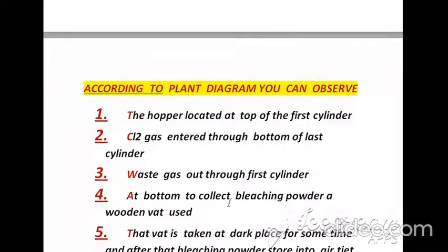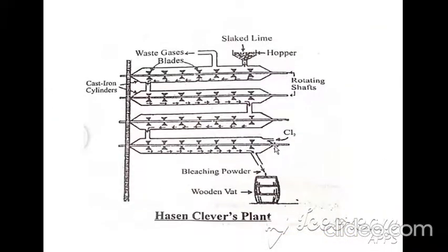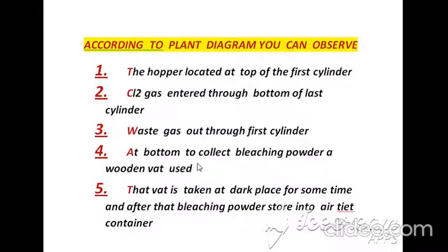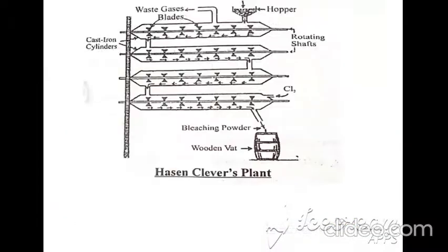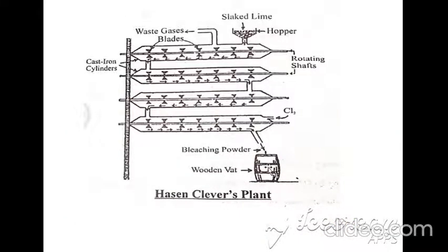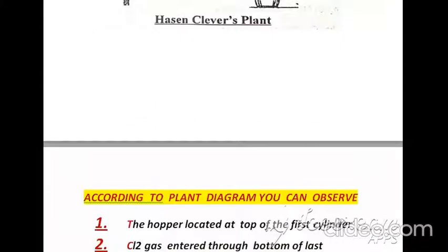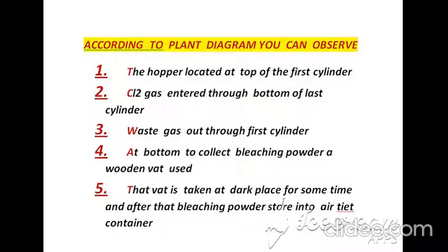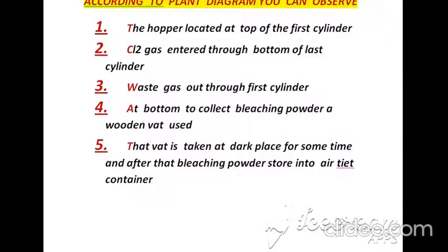Waste gas exits through the first cylinder — after entering from the last cylinder, gas passes through all four cylinders and the waste gas exits from the first cylinder. At the bottom, bleaching powder is collected in a wooden vat. That vat is kept in a dark place for some time, after which bleaching powder is stored in an airtight container, then packed and marketed.